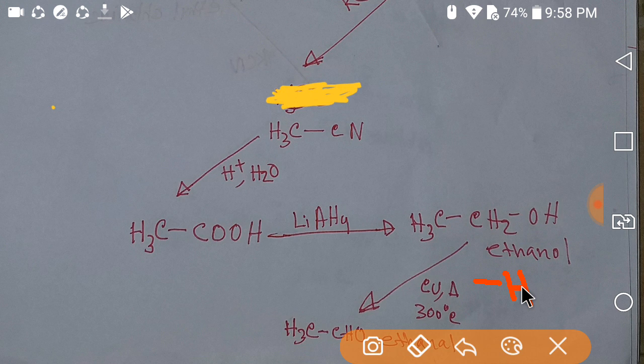If you add aqueous ammonia to ethanoyl chloride, the chlorine is replaced by an NH₂ group, and you get ethanamide — which is the key compound used to remove one carbon from the chain.